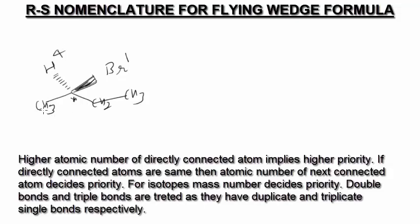Now, how to decide priorities for these two carbon atoms? This carbon is attached to three hydrogen atoms, and this carbon is attached to two hydrogen atoms and one carbon. That is why the higher priority group will be CH2. So I will assign this as second priority and this as third priority.